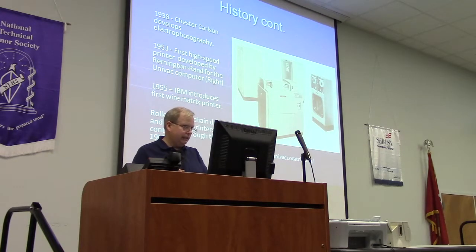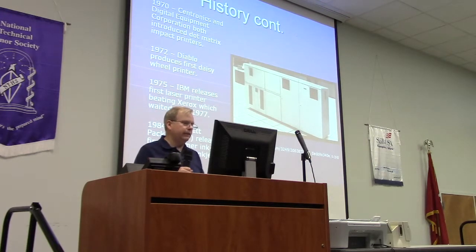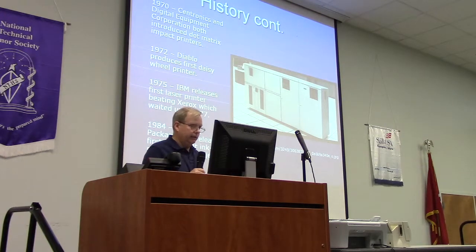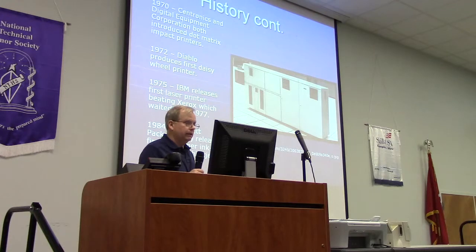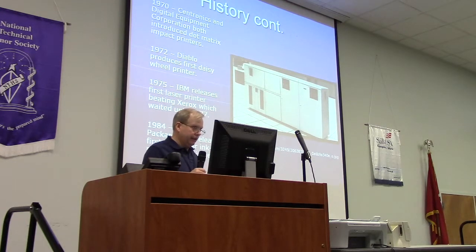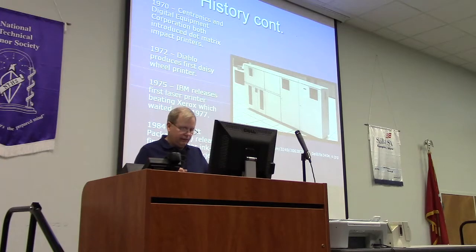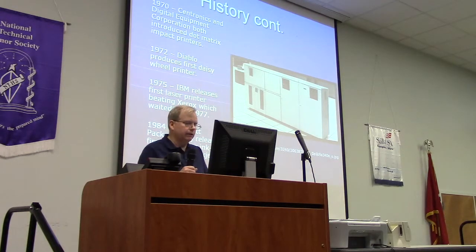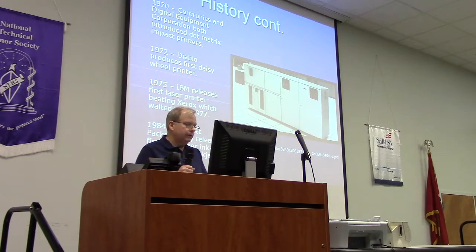Things were fairly static after that — not much information on other printers — until about 1970. A company called Centronics, along with Digital Equipment Corporation, introduced a dot matrix impact printer. The unique thing about the Centronics was it was the first to have a parallel interface. Prior to that, everything was serial; from 1970 on, pretty much all went to parallel. In 1972, Diablo Company produced the first daisy wheel printer.